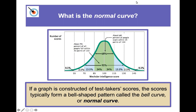These score cut points are used for identifying different groups. A score below 70, combined with difficulties in daily life and adaptive functioning, often leads to identification of an intellectual disability. On the other end, individuals with a score above 130 are often qualified for gifted programs — 130 being the most common cut point.